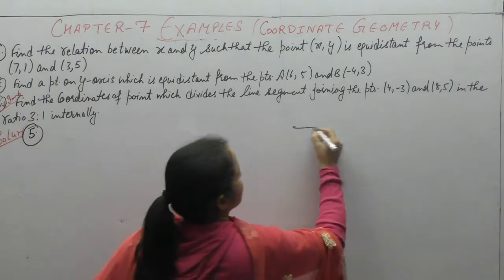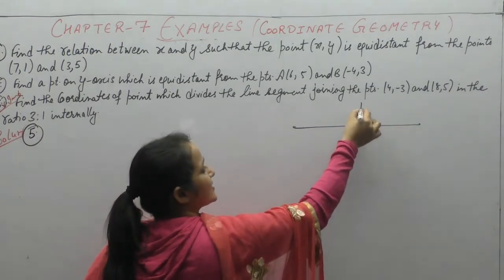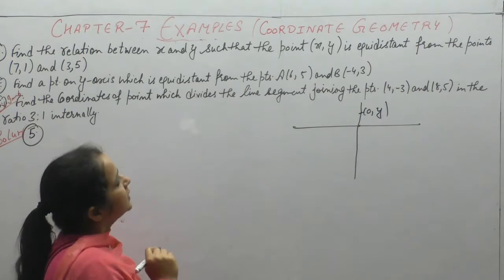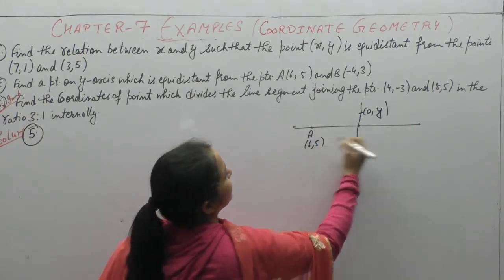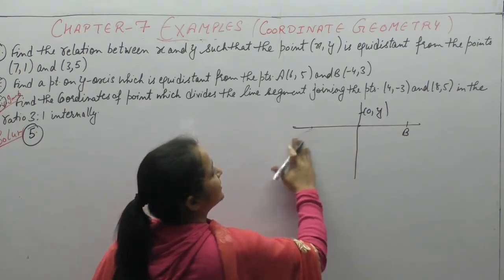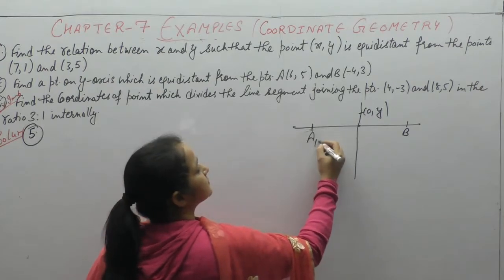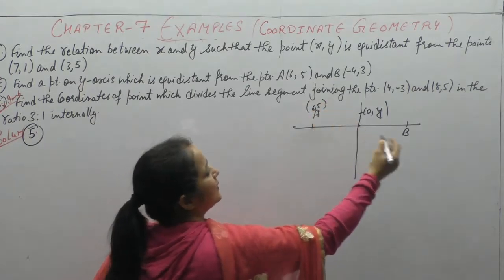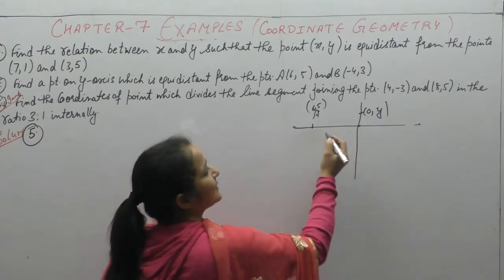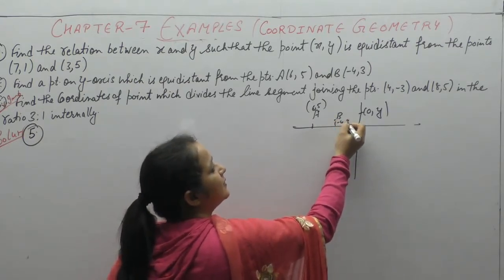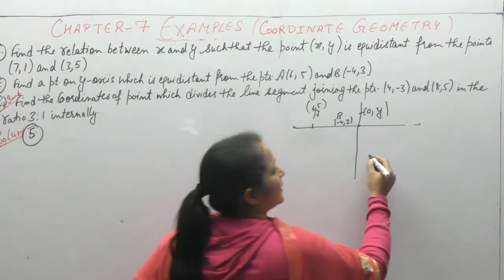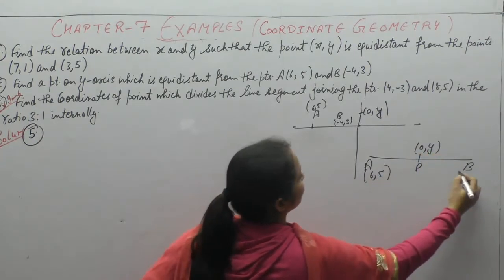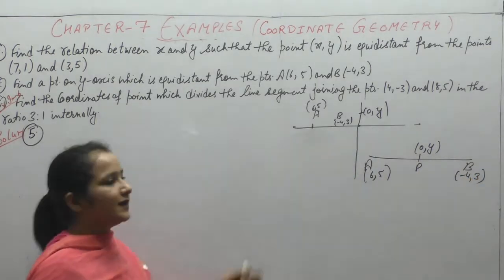Find a point on y-axis equidistant from points A(6,5) and B(-4,3). On y-axis, x-coordinate is zero. A is at (6,5) and B is at (-4,3). You don't need to show points on graph since this isn't the graph chapter.